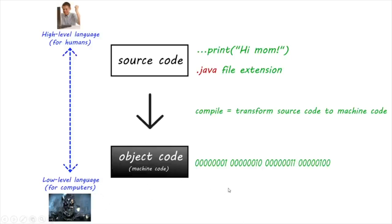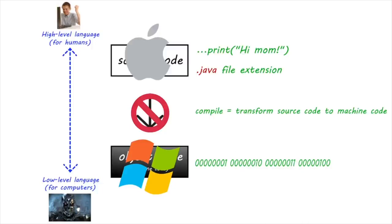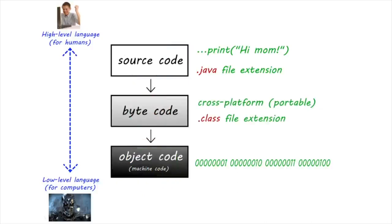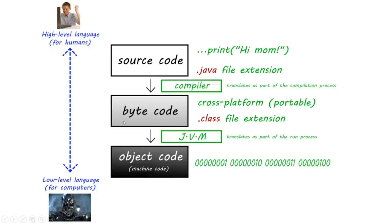However, when we compile our source code to machine code, it's machine-specific. If we write source code and compile on a Mac, we can only run that code on a Mac, and the same applies for PCs. The Java language has a solution for this: with Java, we have an intermediary step where we compile our source code to a format called bytecode. Bytecode is cross-platform and ends with a .class file extension.